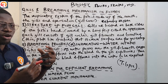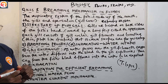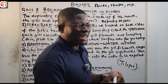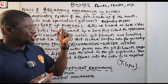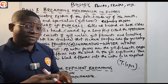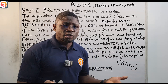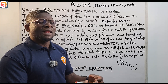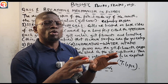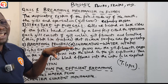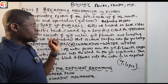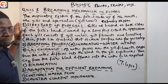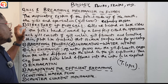Fishes extract oxygen from water through the gills. Their natural habitat is water, so they are always found in water. To respire, they extract oxygen from the water using the gills, because the gills are the respiratory surface of the fish. Let us now look at the process of this breathing mechanism and how it happens.